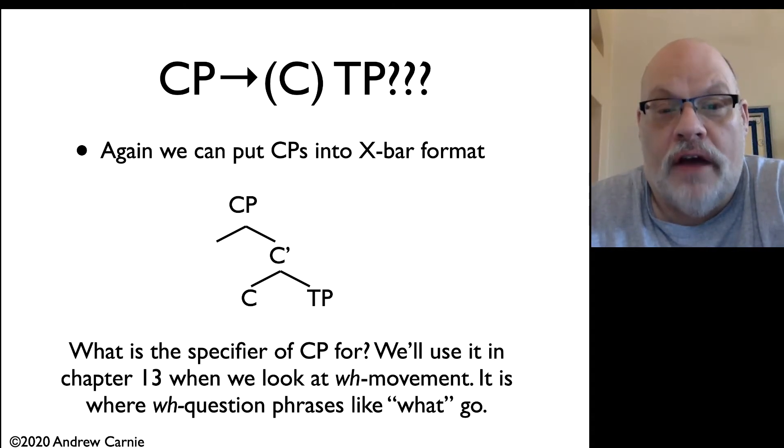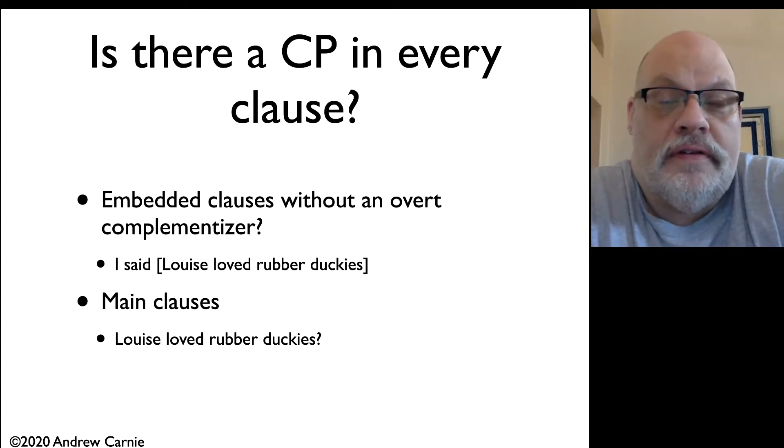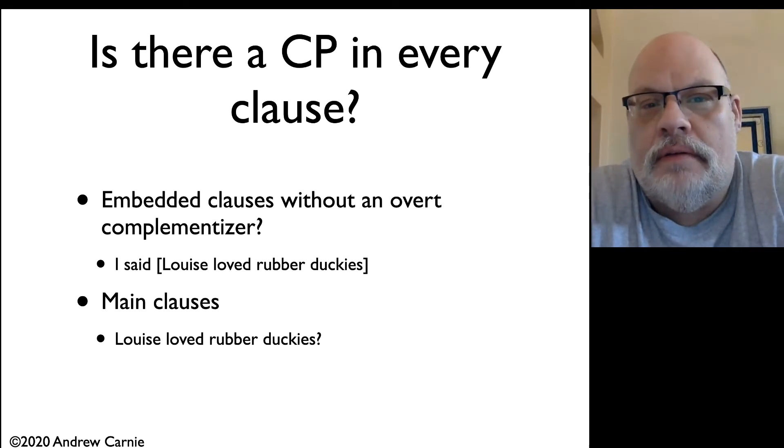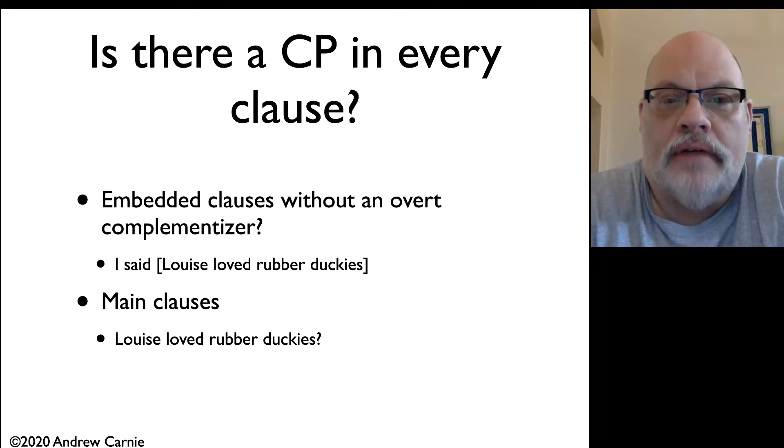Let's move on to some discussion of the CP structure. First of all, you might ask the question, is there a CP in every clause? I've sort of hinted before in previous videos that we would want to have a CP on every clause. But you're immediately left with at least two cases where it looks like you might not have CPs. Take, for example, embedded clauses without complementizers, like I said Louise loved rubber duckies, and main clauses by themselves, Louise loved rubber duckies.